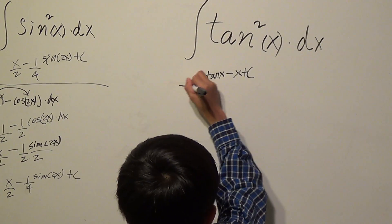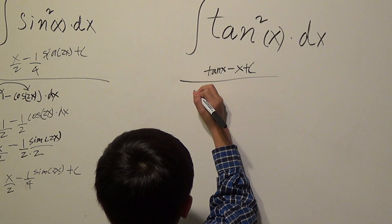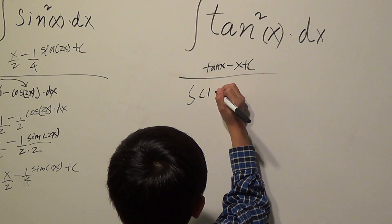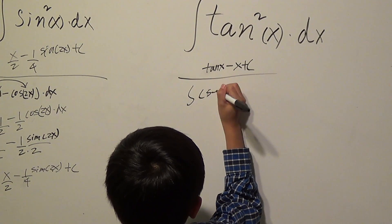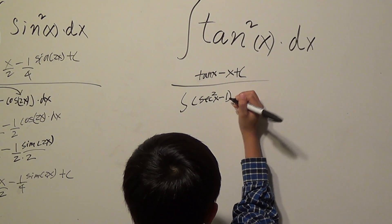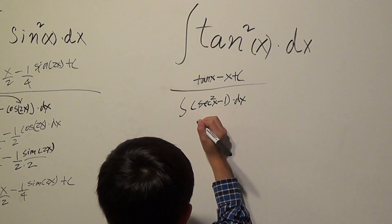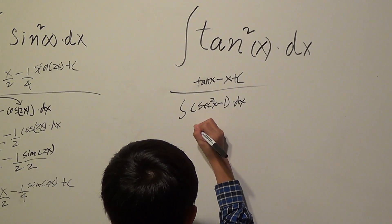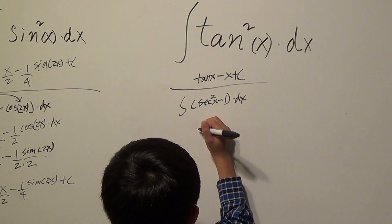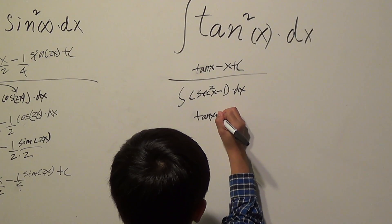Now I will show you what's going on in my mind. Secant squared, it goes up is tangent. And 1 go up is x. So then that's how you do it.